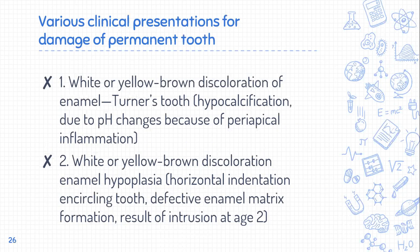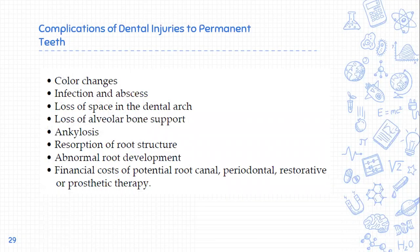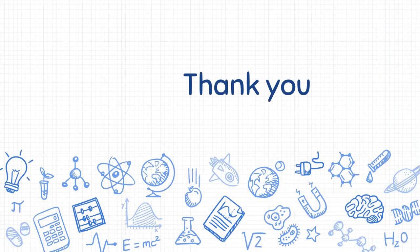Disturbances of eruption may also occur. Complications following dental injury to the permanent teeth when a primary tooth is fractured include: color change, infection and abscess, loss of space in the dental arch, loss of alveolar bone, external root resorption, ankylosis, replacement resorption, and abnormal root development. There is also a significant financial cost associated with potential root canal, periodontal, restorative, or orthodontic therapy.